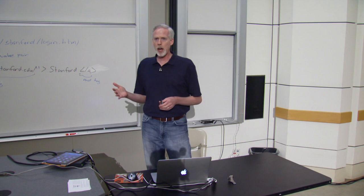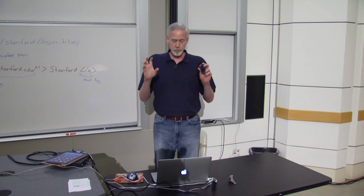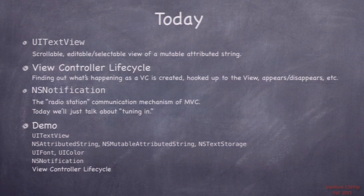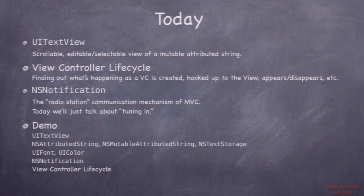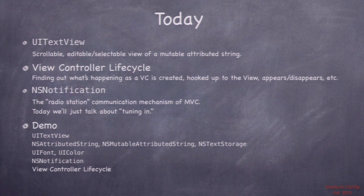Today we're going to continue our discussion of attributed string from last time and talk about UITextView, which is basically a mutable attributed string viewer — kind of like a UILabel, but much more powerful. Then we're going to talk about a very important conceptual thing in iOS 7: view controller life cycle, how the controller part of your MVC gets notified at different times in its life cycle. Then we'll talk about the radio station that I refer to in MVC.